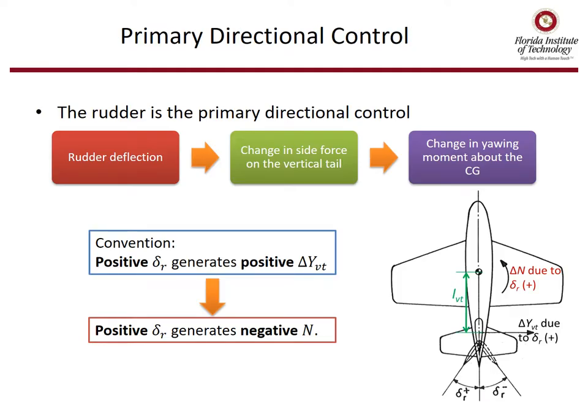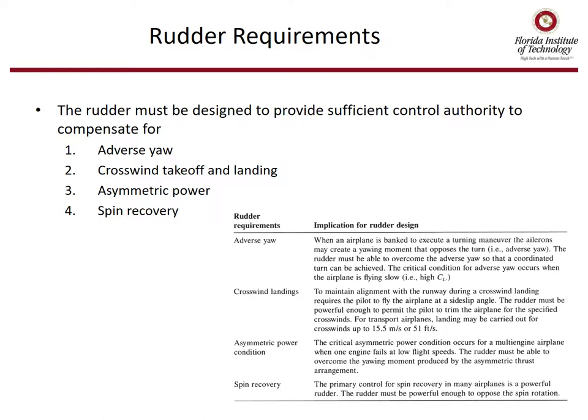The rudder is the primary directional control. When the rudder is deflected, there's a change in side force on the vertical tail, and that changes the yawing moment about the CG. Positive delta-R generates positive change in side force but negative yawing moment. The rudder must be designed to provide sufficient control authority to compensate for adverse yaw, crosswind takeoff and landing, asymmetric power, and spin recovery.